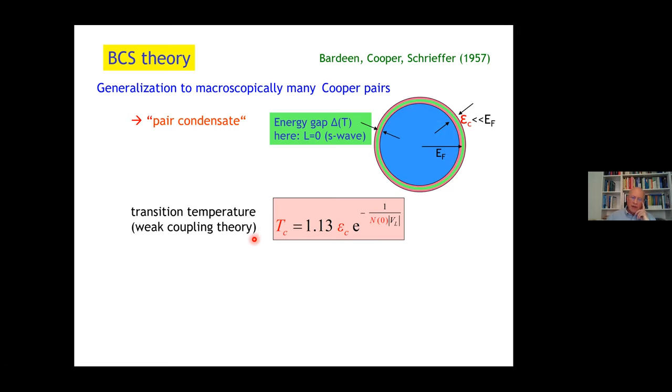The transition temperature in weak coupling theory is given by one of the most beautiful short equations in theoretical physics. T_C is 1.13 times epsilon_c times e to the minus one over the density of states times the depth of the attraction. This is such a marvelous equation. Particle physicists envy us for that because it solves a longstanding hierarchy problem.